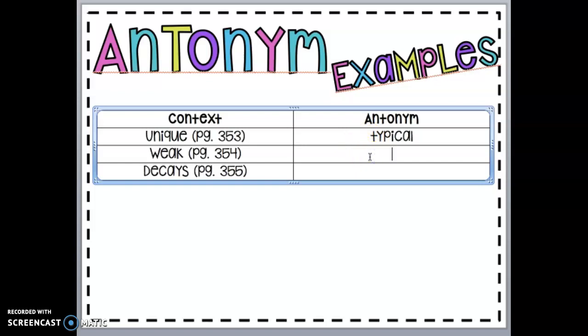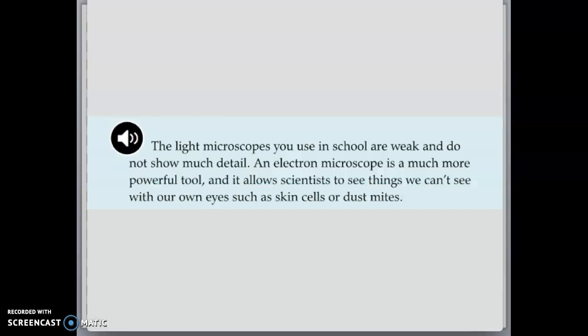Awesome. Let's work on the next one. Our word is weak. We're going to head to page 354. Look around to see if we can find what the opposite of weak means. Now you know weak means it's not strong. It's not powerful. So let's look for the opposite of weak. Let's read the passage. Remember our word is weak. We are looking for the word that means the opposite of weak. The light microscopes use in school are weak and do not show much detail. An electron microscope is a much more powerful tool and it allows scientists to see things that we can't see with our own eyes such as skin cells or dust mites.